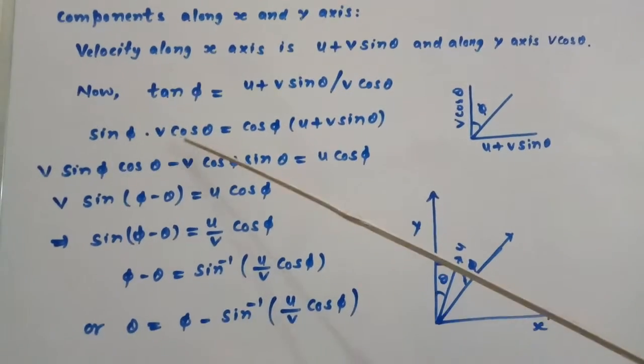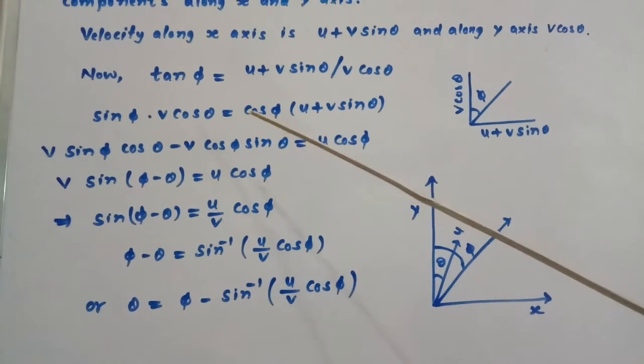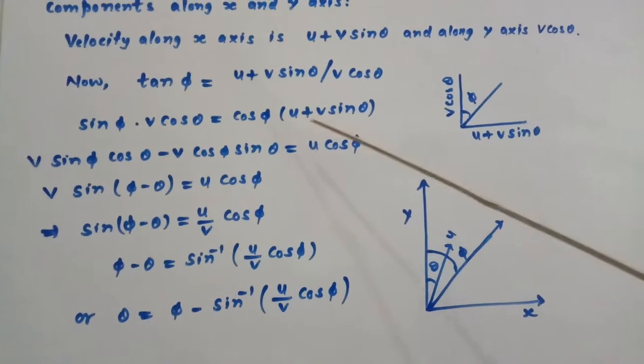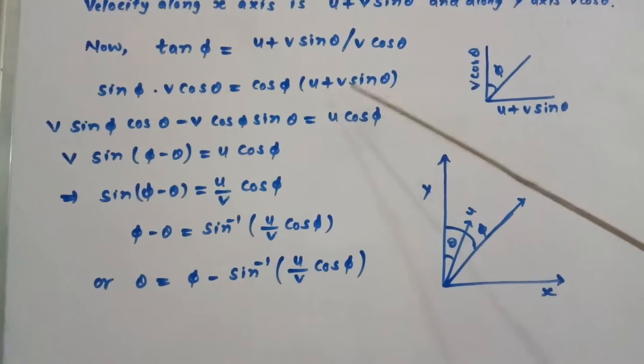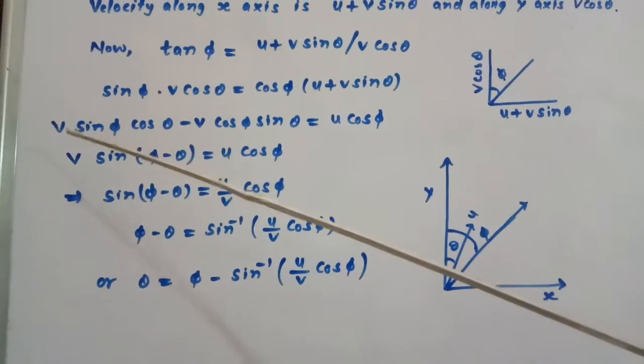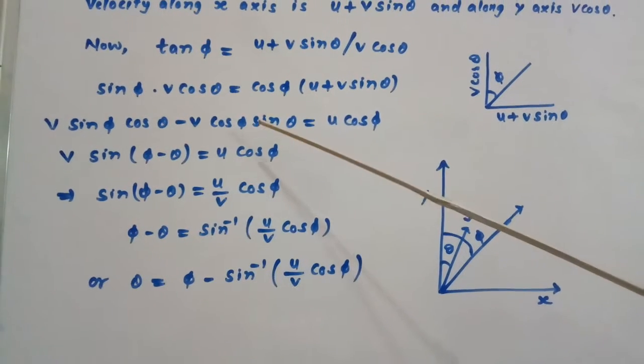We get sin phi dot V cos theta equals cos phi times (U plus V sin theta). We open the bracket and simplify to get V sin phi cos theta minus V cos phi sin theta equals U cos phi.